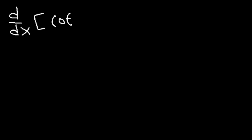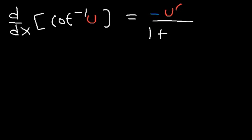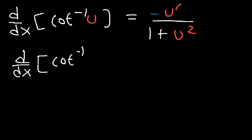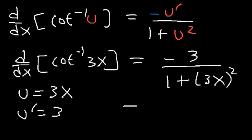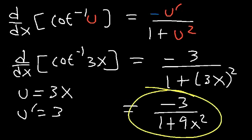The next formula is the derivative of the inverse cotangent function, which equals negative u prime over 1 plus u squared — just like inverse tangent, but negative. For example, the derivative of inverse cotangent of 3x: u equals 3x, so u prime is 3, giving negative 3 divided by 1 plus 3x squared, which simplifies to negative 3 over 1 plus 9x squared.